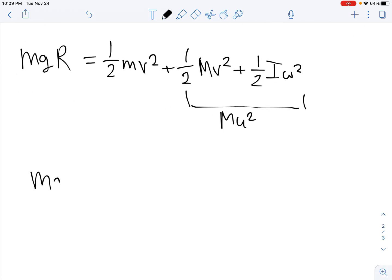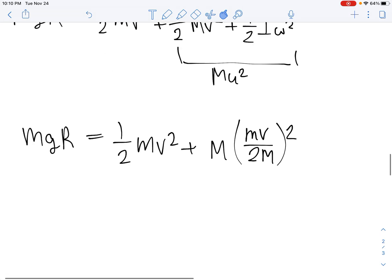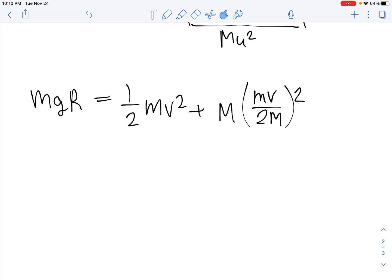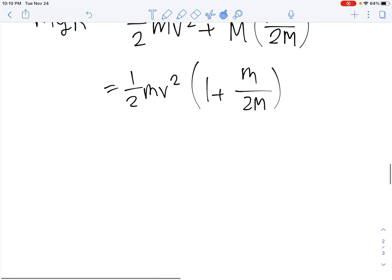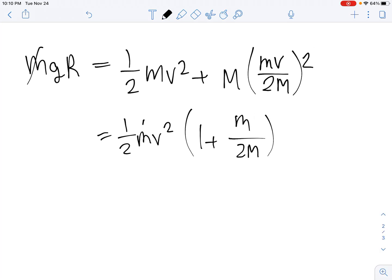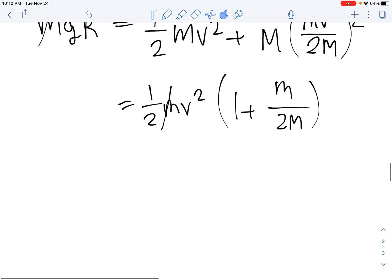Since we're rolling without slipping and the moment of inertia is MR squared, we can say that this is the same thing as Mu squared. We know that u essentially is m over 2M times v. So we now conserve energy to get this type of equation.